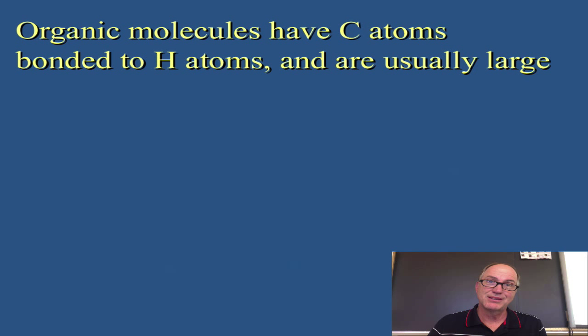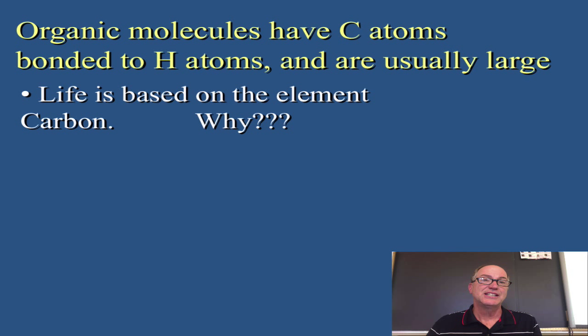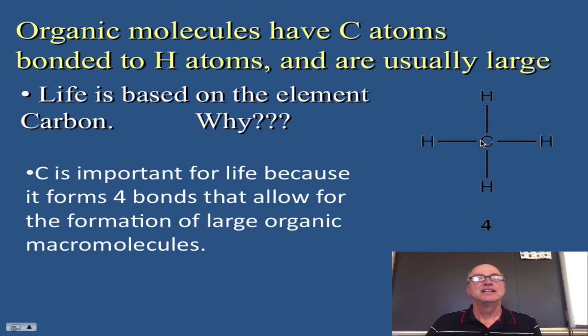So, guess what? Organic molecules do have carbon, and they have carbon bonded to hydrogen atoms, and they're usually quite large. Do you know why life is based on the element carbon? Carbon is an important atom because it can make four bonds. It can bond to itself, so this carbon could bond to another carbon over here. It can bond to hydrogen, it can bond to oxygen. It's a very friendly atom, and it makes lots of bonds, which allows molecules to grow very, very large. So we call them macromolecules. It makes things like DNA.